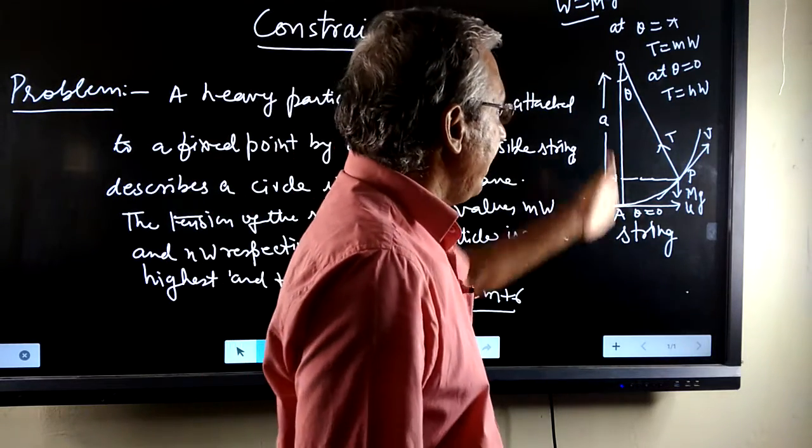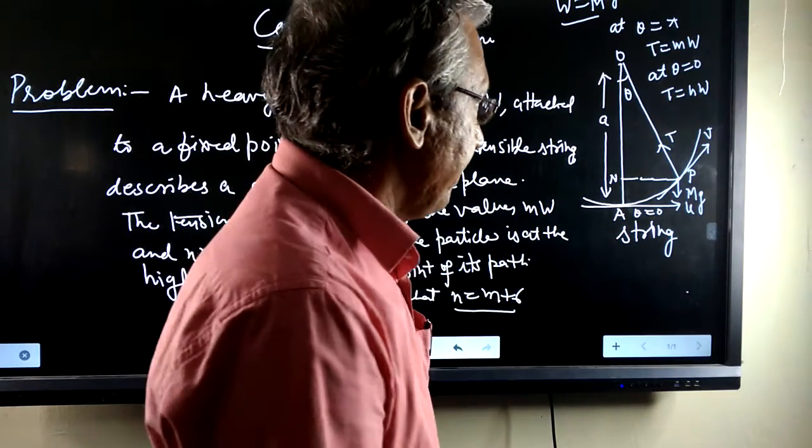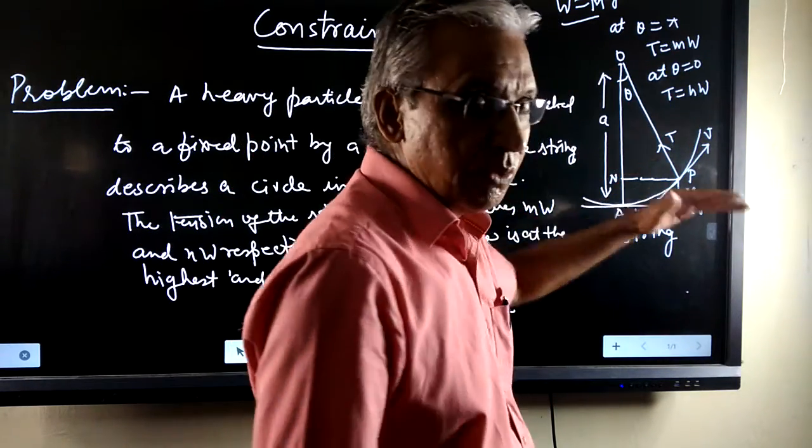Here we know that this is an inextensible string. Suppose it is a long string. The lowest point is a, where theta is equal to 0.